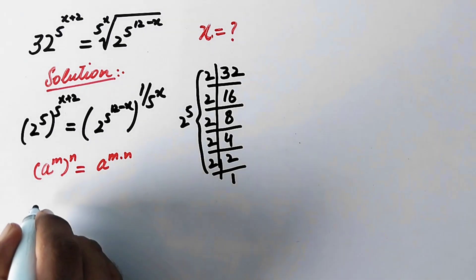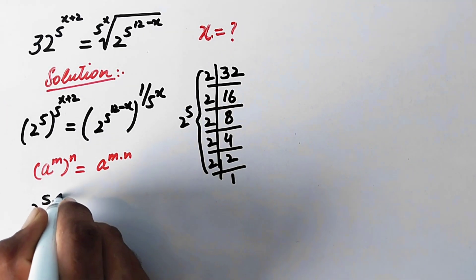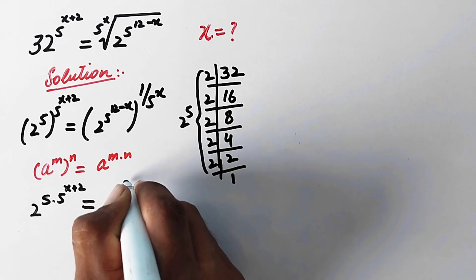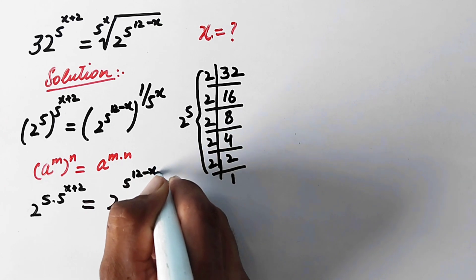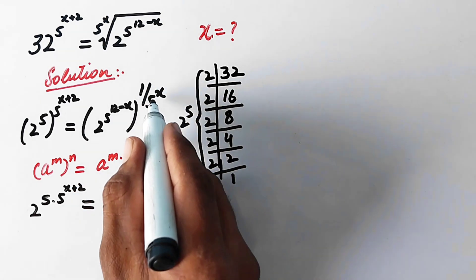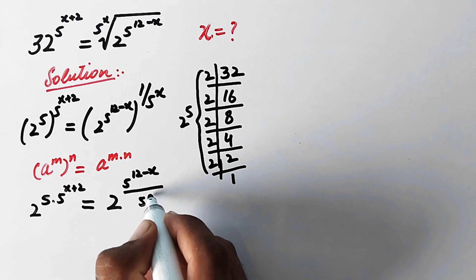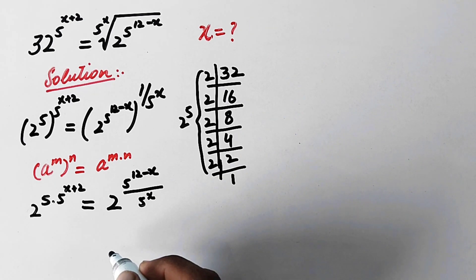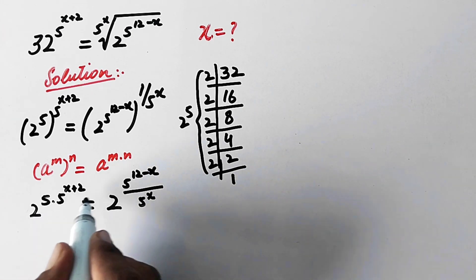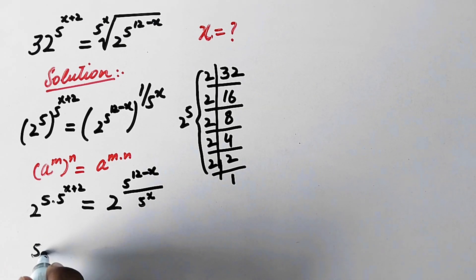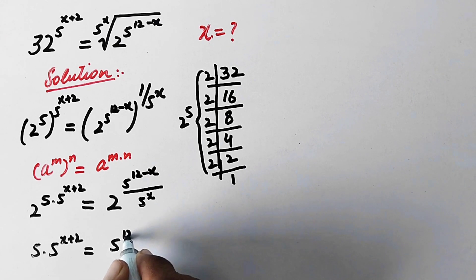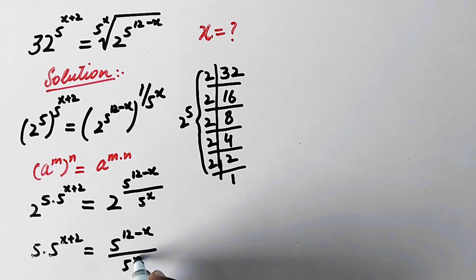So we can write 2 raised to the power 5 raised to the power 5 raised to the power 5 raised to the power x plus 2, which equals 2 raised to the power 5 raised to the power 12 minus x. When the powers multiply, the 1 over 5 becomes divided by 5 raised to the power x on the right-hand side. Here we can see that the base on both sides is the same — 2 equals 2. So we can compare the powers and write 5 times 5 raised to the power x plus 2 is equal to 5 raised to the power 12 minus x divided by 5 raised to the power x.